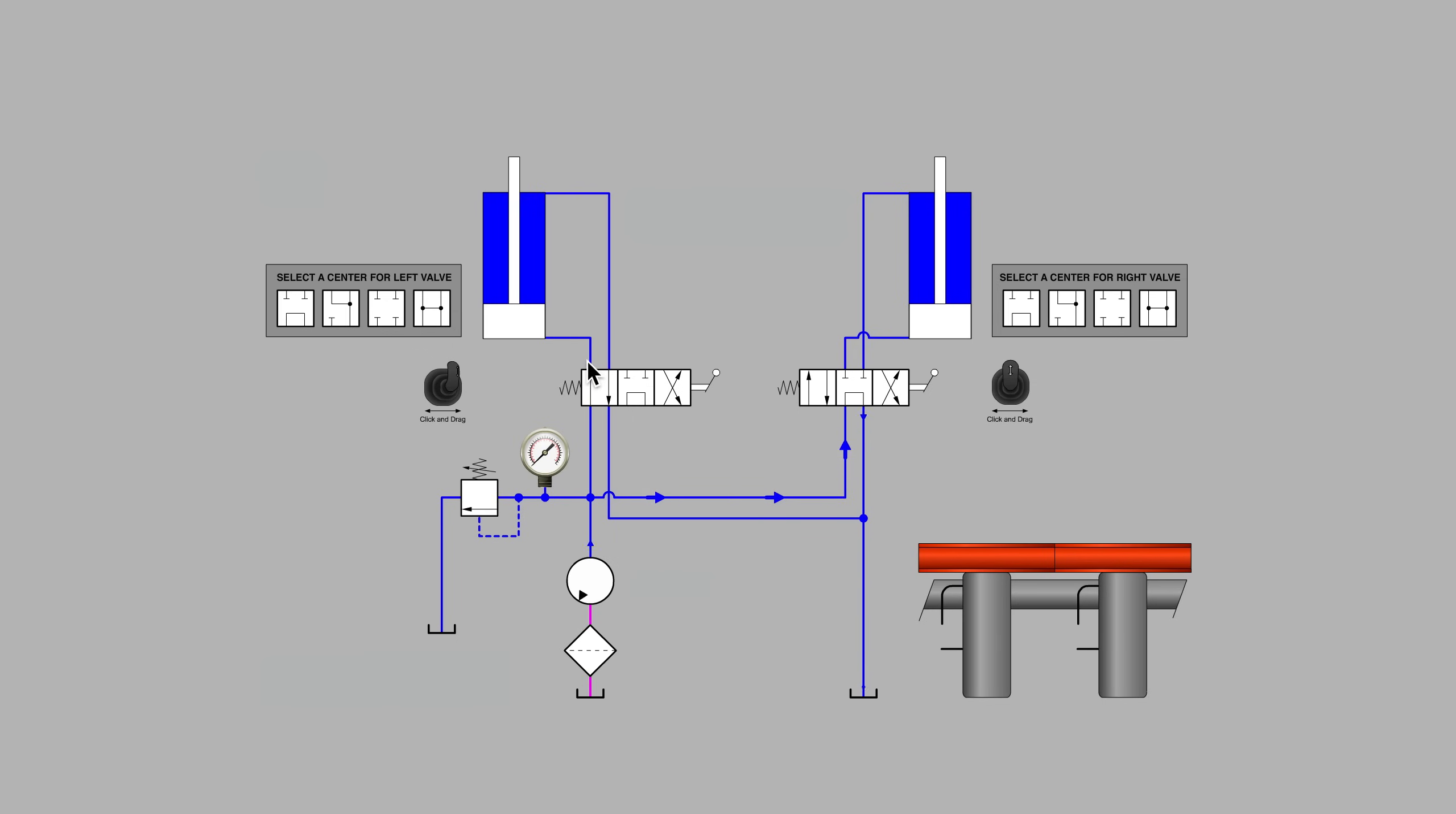Just like as we were working with the open center valves, while trying to extend the cylinder on the left, all of the pumps flow has a leakage path back to tank through the valve on the right. Same holds true for the other direction. Perhaps if we were to introduce a valve on the right that blocks the P port. In this particular case, I've chosen the float center. What will happen now?